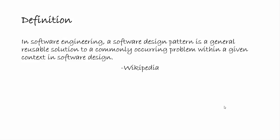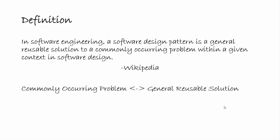This is the Wikipedia definition: in software engineering, a software design pattern is a general reusable solution to a commonly occurring problem within a given context in software design. There are two important phrases here — a commonly occurring problem, and a general reusable solution — and that general reusable solution is what we call a software design pattern.